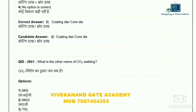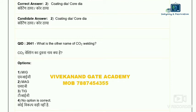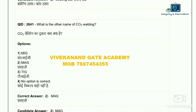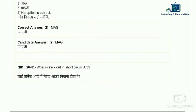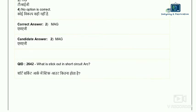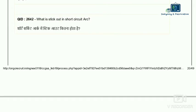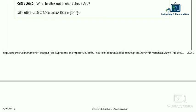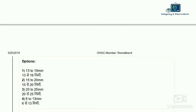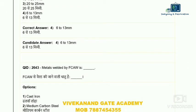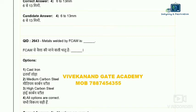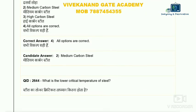Question 41: what is the other name of CO2 welding? CO2 welding is also known as MAG welding — Metal Active Gas welding. Carbon dioxide is an active gas, so CO2 welding comes under Metal Active Gas welding. So MAG is the correct answer. Question 42: what is stick out in short circuit welding? Stick out is the length of wire extending from the contact tip. Normally stick out is 6 mm to 13 mm — option four is the correct answer.